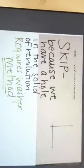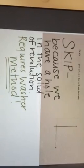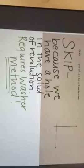For example three we're actually going to skip this example for now because it would have a hole in the graph or in our solid of revolution and that would require us to use the washer method which we haven't introduced yet.